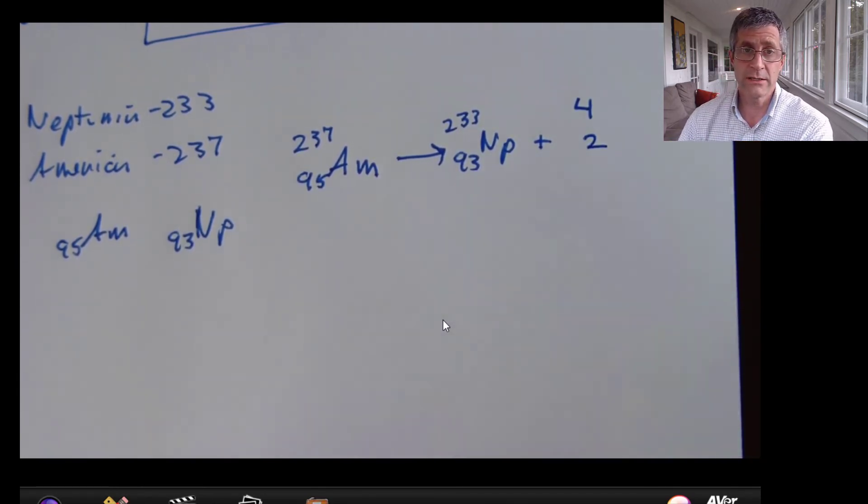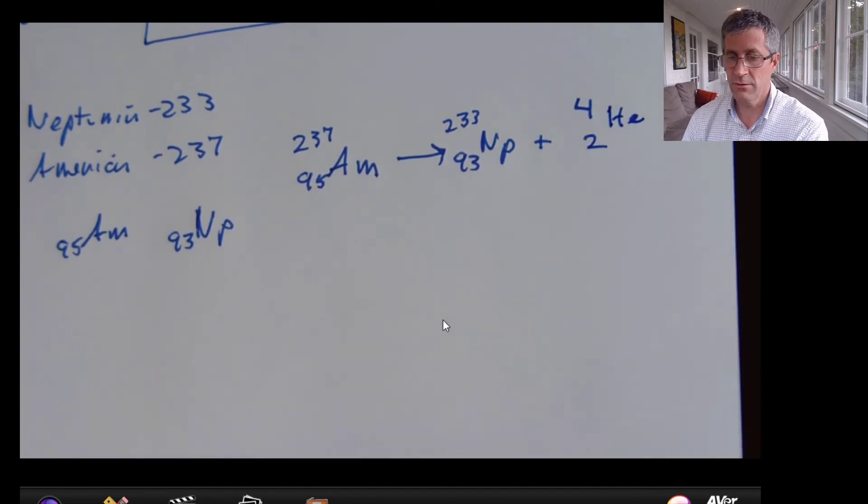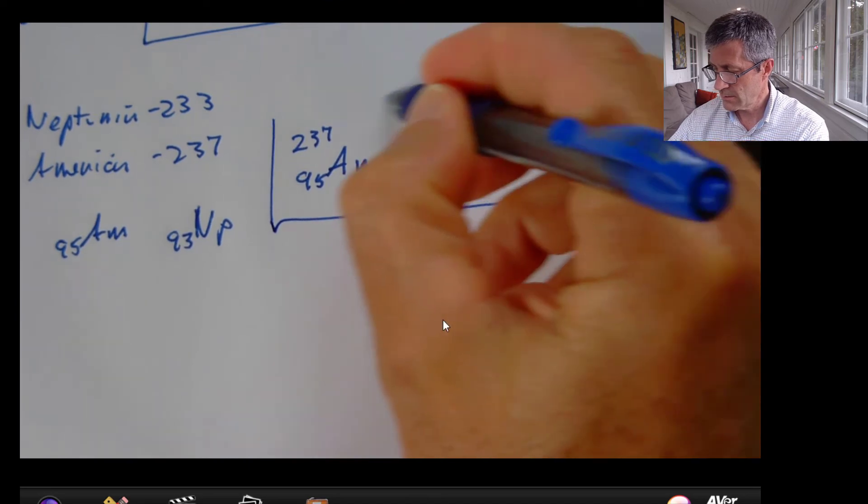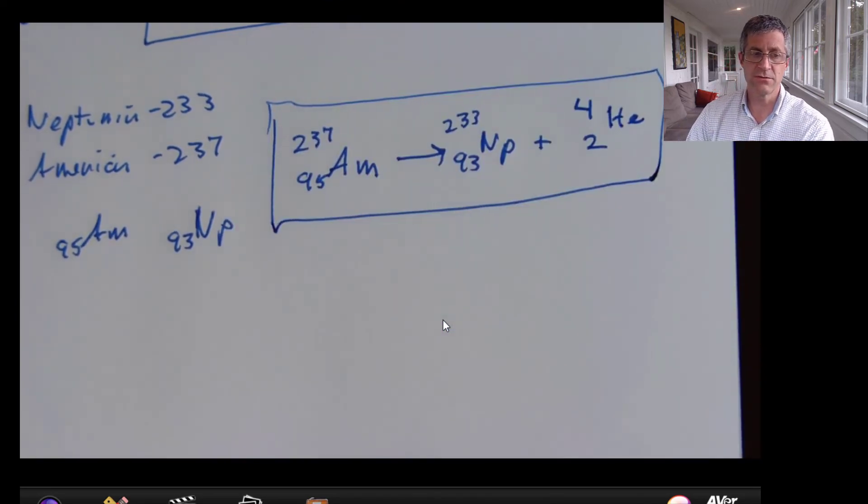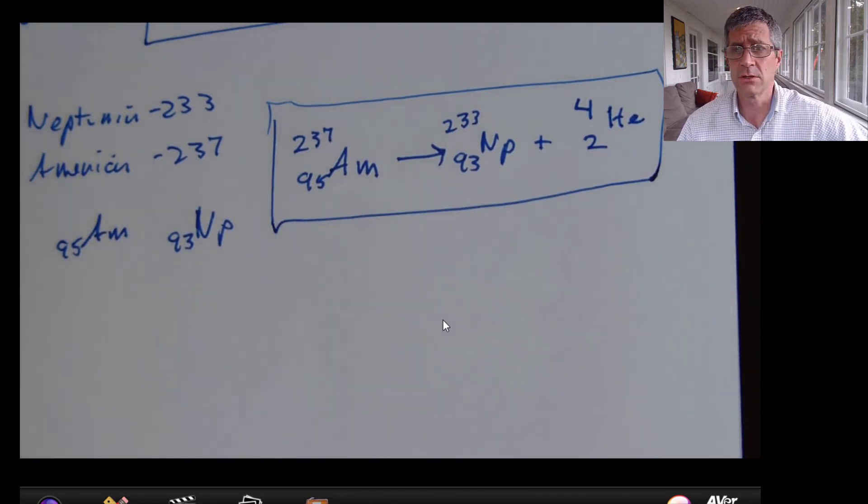And there's only one particle that has a mass of four and a charge of two. This is my helium nucleus or alpha particle. There we go. That's a decay reaction for americium. This is used in smoke detectors. If you look in your smoke detector at home, it probably has a tiny bit of americium there. Don't go looking for it. And it throws out alpha particles, which are not particularly dangerous. Anyway, I hope you can do the rest on your own. Let me know if you can. I'm happy to help you. Talk to you soon. Bye.